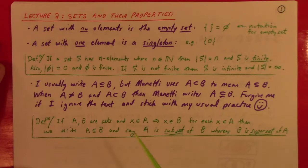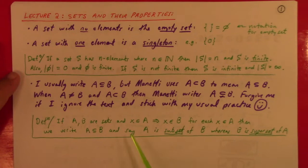If A and B are sets, and x is an element of A implies x is an element of B for each x in A, then we write A is a subset of B. In that context, we also say that B is a superset of A.